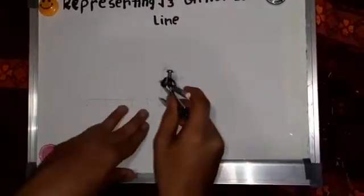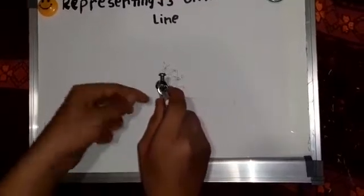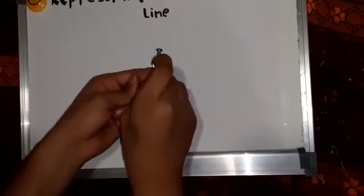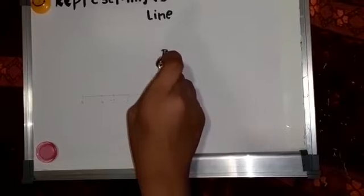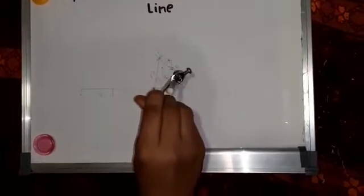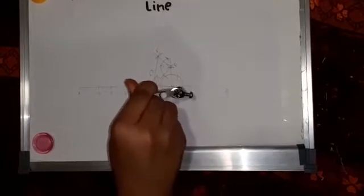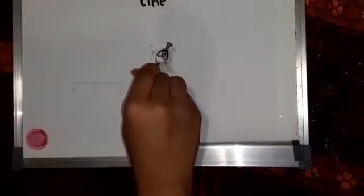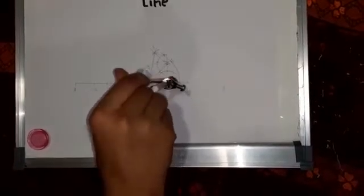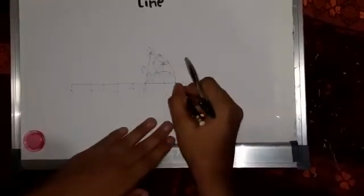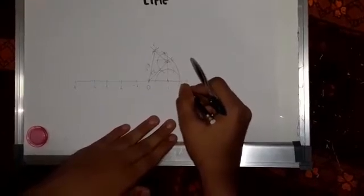So we will take this root 3. Root 3. Then just an arc. So this point is your root 3 on number line.